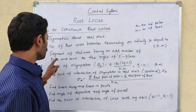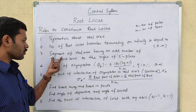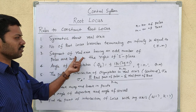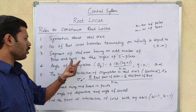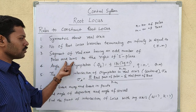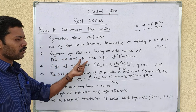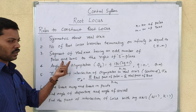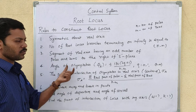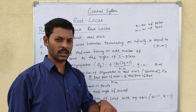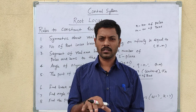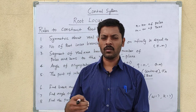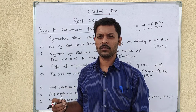That is the root locus technique. The third point is: a segment of the real axis is part of the root locus if there is an odd number of poles and zeros to the right of that segment in the S-plane.